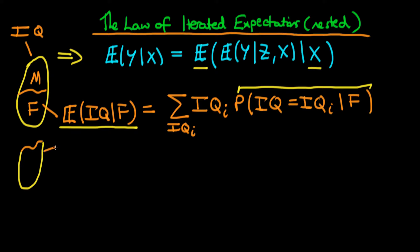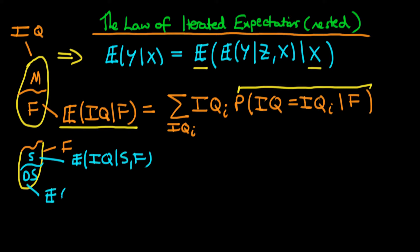The idea is that this whole shape here represents the female population, and what we could do is we could break up the female population into those that smoke and those that don't smoke. And then intuitively, if we can work out the average level of IQ in the female population for those that smoke — the expected value of IQ given that an individual smokes and that they're female — and if we could work out the expected value of IQ given that an individual doesn't smoke and also given that they're female, then if we multiply those two subpopulations by the relative proportions and add them together, that should give us the overall average level of IQ within the female population.